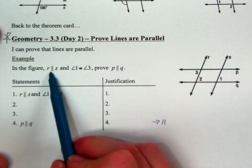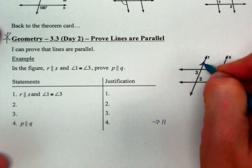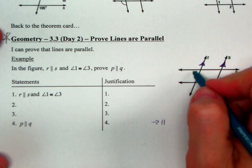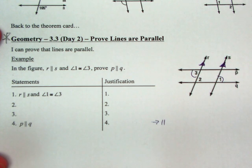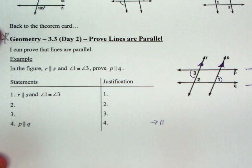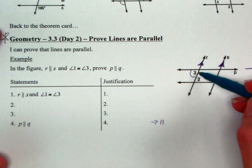So the first one says R is parallel to S, so I kind of want to mark that. Those are the two that are parallel, and 1 is equal to 3, so I'm going to mark that as well. I want to prove that P and Q are parallel. So I have to talk about two angles that touch P and Q, and also touch the same transversal, and the only ones that do that are 3 and 2.